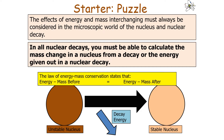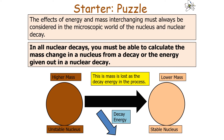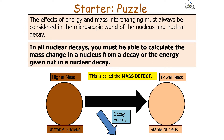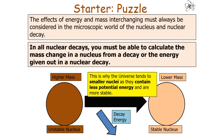In all nuclear decays, you have to be able to calculate the mass change in a nucleus from a decay or the energy given out, because the law of energy-mass conservation states that energy-mass before equals energy-mass after. Your unstable nucleus tends to have a higher mass than your more stable nucleus, so this mass loss is released as decay energy — also called the mass defect. This increases the stability of the nucleus as it has less potential energy stored in its structure, which is why the universe tends toward smaller nuclei, as they contain less potential energy and are therefore more stable.